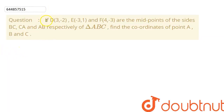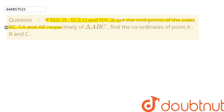Hello everyone. Today we are going to discuss one question on coordinate geometry. In this question we are given that the D coordinate is (3, -2), the E coordinate is (-3, 1), and the F coordinate is (4, -3). D, E and F are the midpoints of the sides BC, CA and AB of a triangle ABC. We need to find the coordinates of point A, point B and point C.